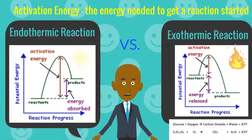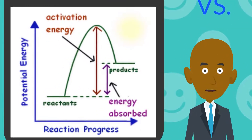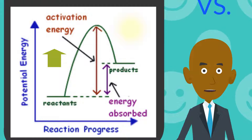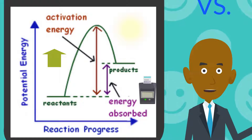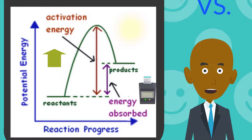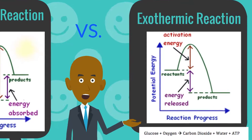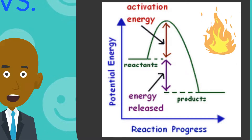Now let's take a look at activation energy — the energy needed to get a reaction started. For endothermic reactions, there is a much larger amount of activation energy required compared to exothermic reactions, and since there is, endothermic reactions actually absorb energy — they take in heat, just like photosynthesis. For exothermic reactions, the activation energy is lower and it actually releases heat, just like cellular respiration.